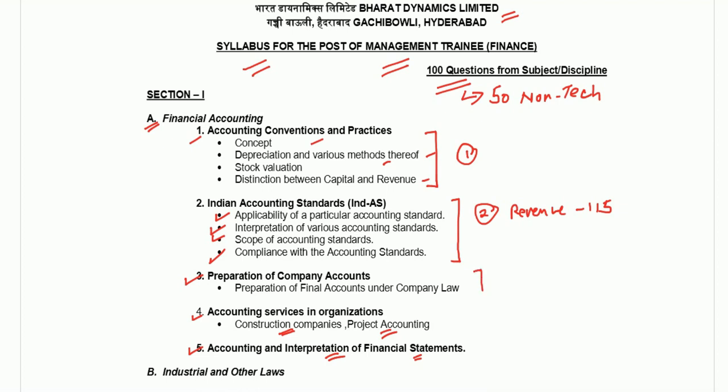Preparation of company accounts won't be that difficult since it follows schedule 3. The accounting interpretation is basically ratios and related things. Construction companies and project accounting — one or two questions maximum can be asked; it won't be dominated by these. You should at least practice the other four topics thoroughly. I hope financial accounting is clear.